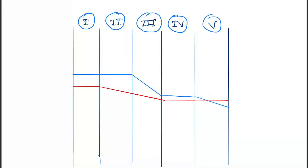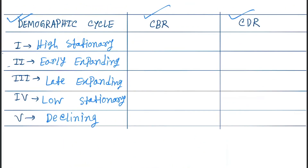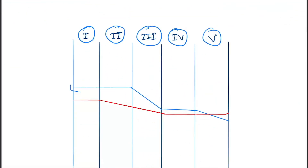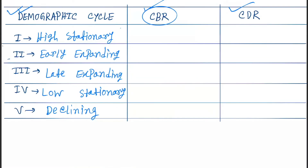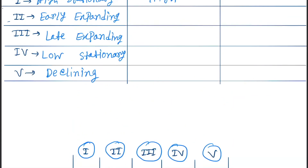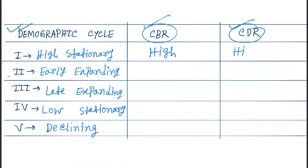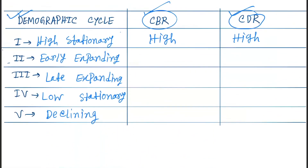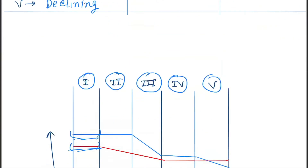Now let's understand by phase. For CBR in the high stationary phase — phase one — CBR is high. CDR is also high. Because we measure the level from the bottom, both are high in phase one.